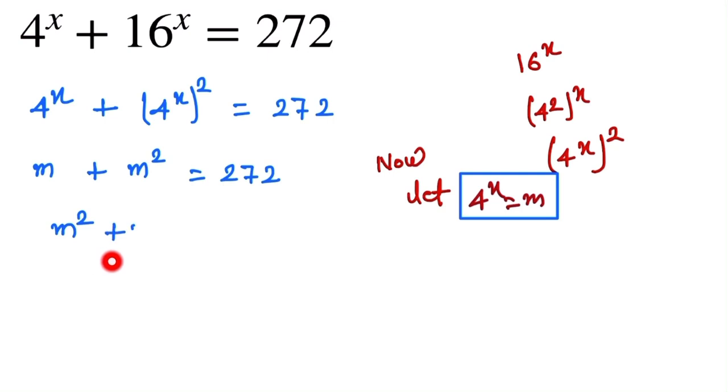Now we arrange this in quadratic form, so m^2 + m - 272 = 0.